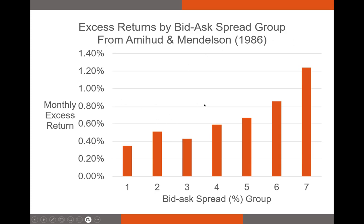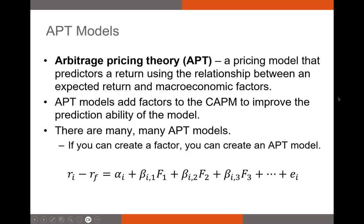Using data from Amihud and Mendelson (1986), stocks are sorted into seven portfolios based on bid-ask spread scaled by share price. Portfolios with the highest bid-ask spread — the most illiquid stocks — are on one end, while the lowest bid-ask spread portfolio, containing highly liquid stocks like Apple, Alphabet, Amazon, and Netflix, is on the other. The excess returns on illiquid portfolios are significantly higher than those on the liquid portfolio, confirming the illiquidity premium.